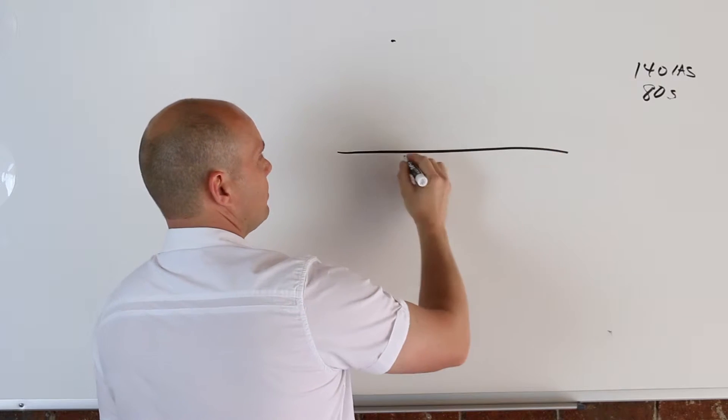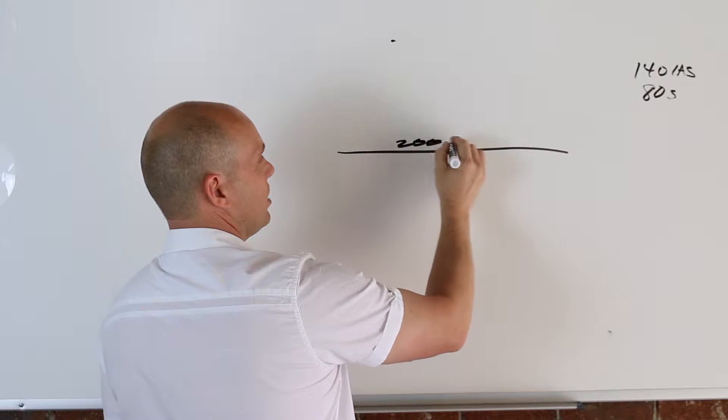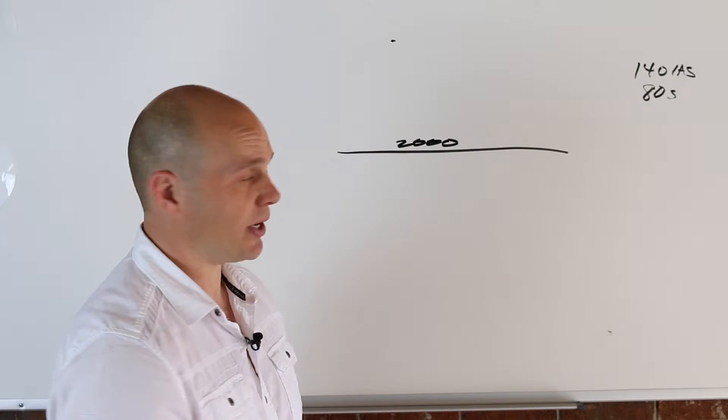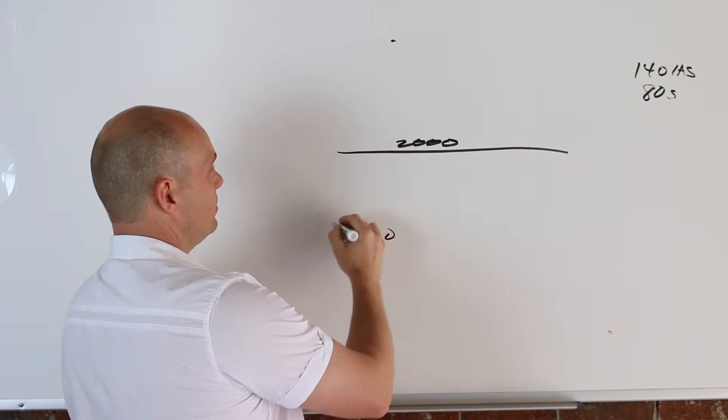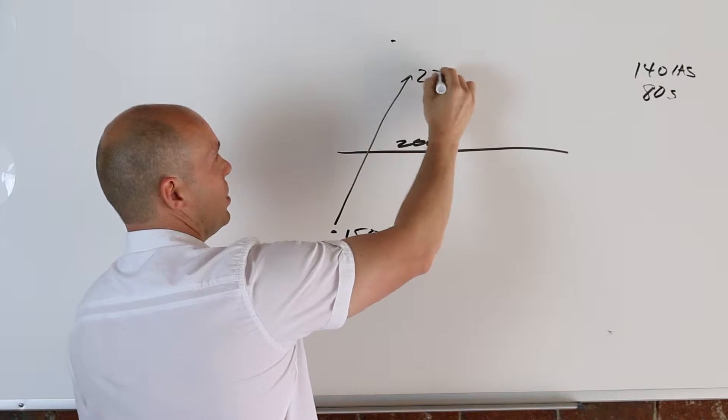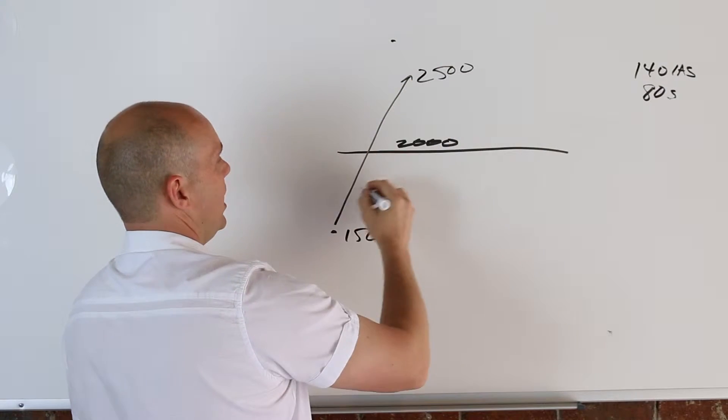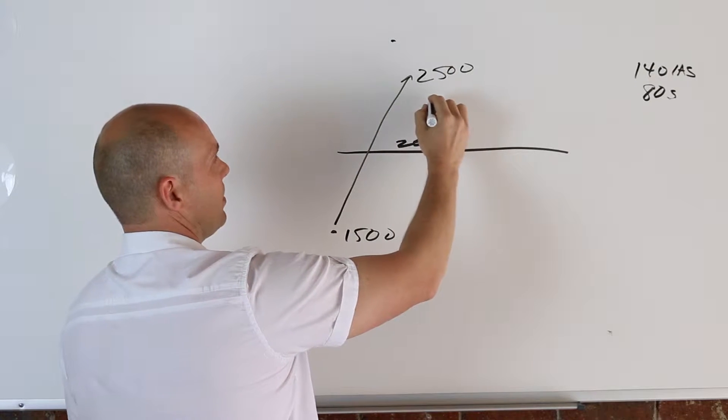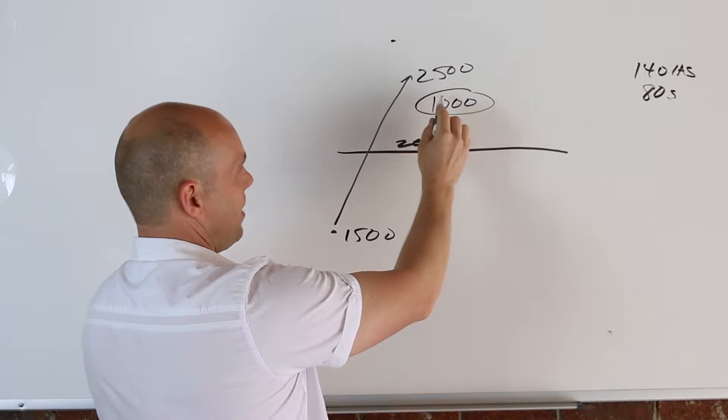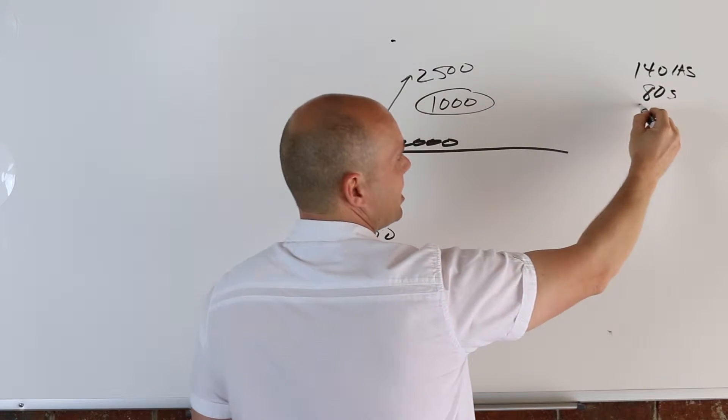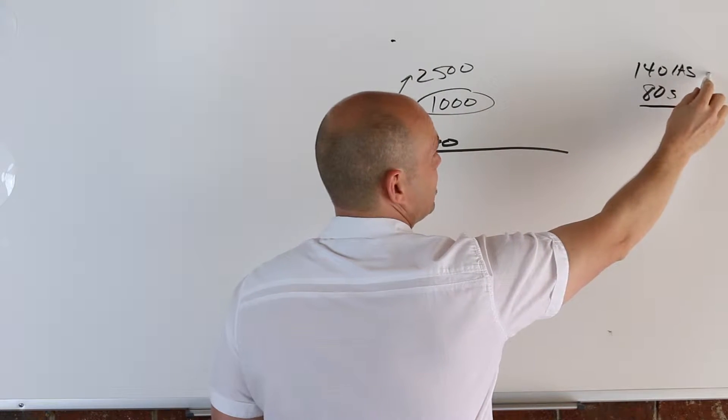So I'll just explain this a little bit better here. You have your pressure altitude here of 2,000 feet. And you're going to climb from 1,500 feet up to 2,500 feet. And this distance is 1,000 feet. And to climb that 1,000 feet, it's going to take you 80 seconds. And that's at this airspeed 140.